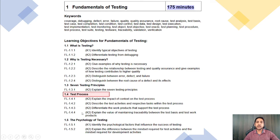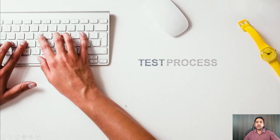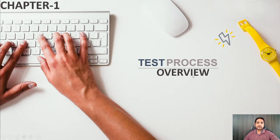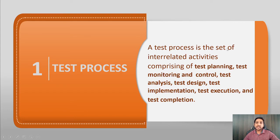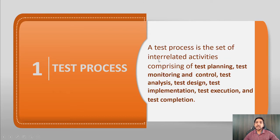These are the four topics we are going to cover under test process. A test process is a set of interrelated activities comprising test planning, test monitoring and control, test analysis, test design, test implementation, test execution, and test completion. All these things together constitute the test process. What you need to remember is that it is a set of interrelated activities.